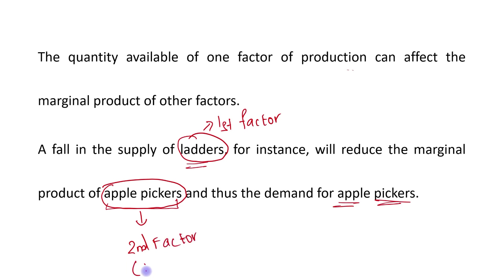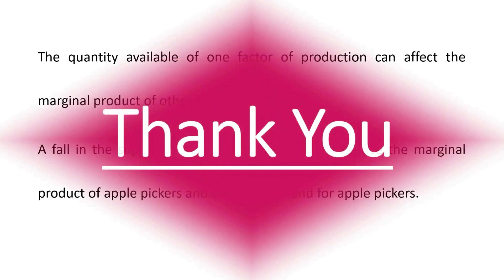The quantity of one factor — ladders — will affect the marginal product of the second factor, which is labor. When there is a fall in the supply of ladders, it reduces the efficiency of apple pickers, reduces their marginal product, and thus the demand for apple pickers will be reduced. We have now covered all three factors affecting the shift in labor demand curve: output price, technological change, and supply of other factors. Thank you.